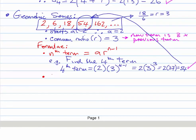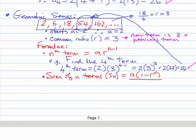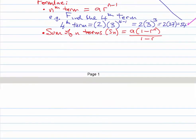Now the last thing is to find the sum of n terms for a geometric series. We write S_n, and the formula from your workbook is: a times (1 minus r to the n) all over (1 minus r). Let's do an example — find the sum of the first four terms.